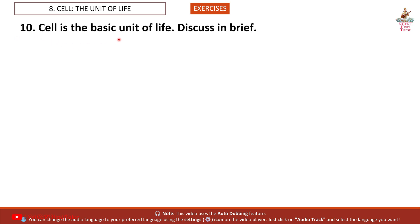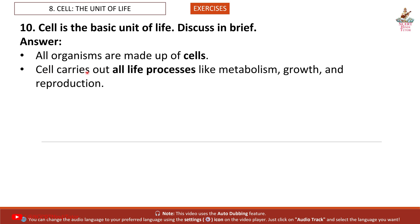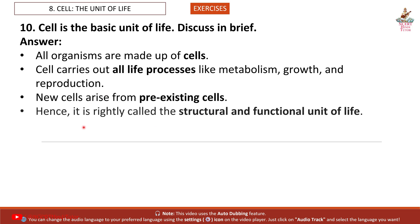Question 10: Cell is the basic unit of life. Discuss in brief. Answer: All organisms are made up of cells. Cell carries out all life processes like metabolism, growth and reproduction. New cells arise from pre-existing cells. Hence, it is rightly called the structural and functional unit of life.